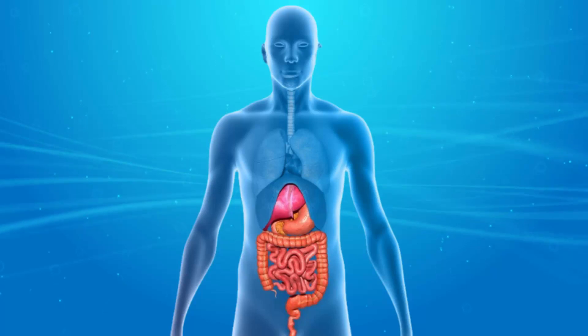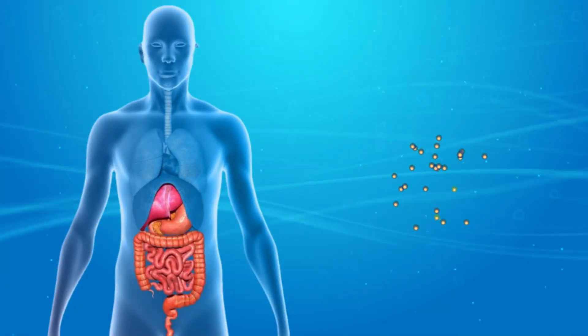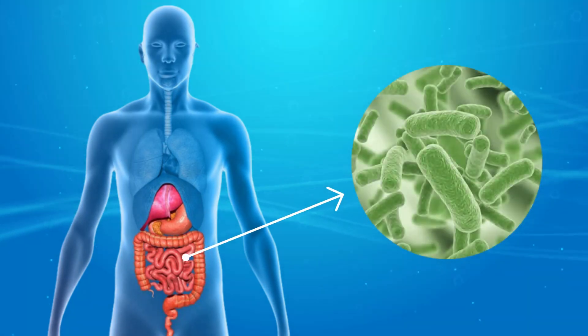The human digestive system is a complex system that is responsible for breaking down the food we eat into smaller particles so that our body can absorb the nutrients it needs. But this process wouldn't be possible without the help of the microorganisms that reside in our gut.